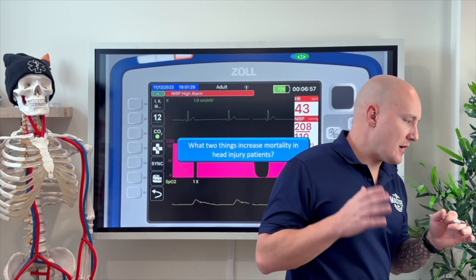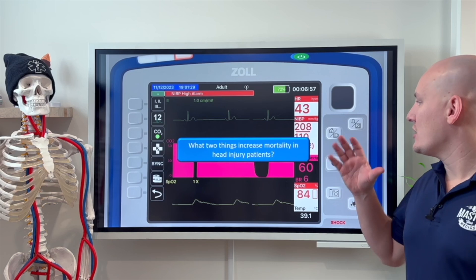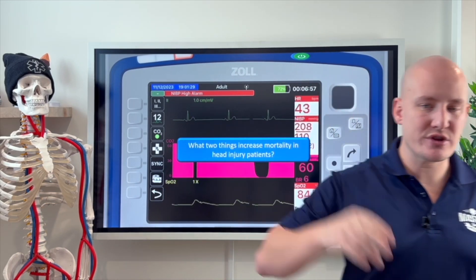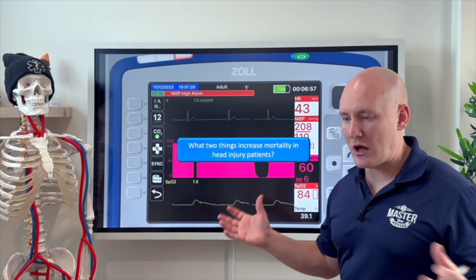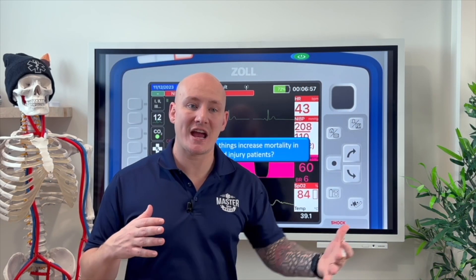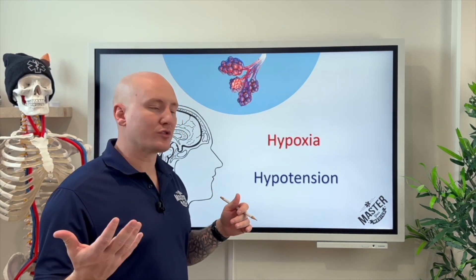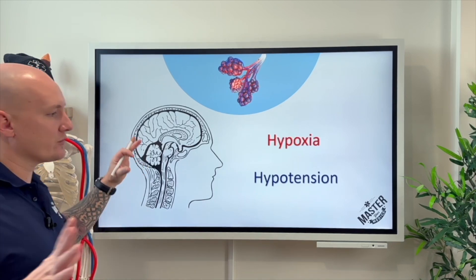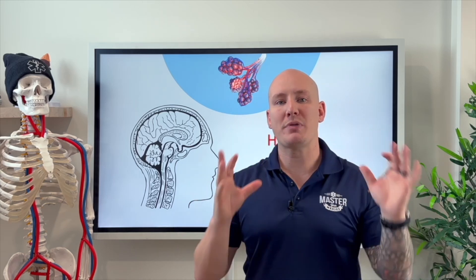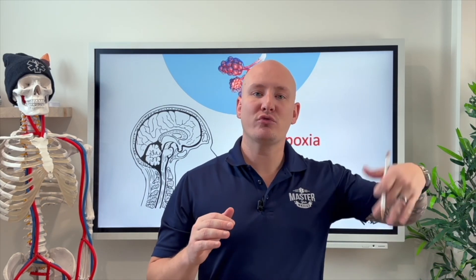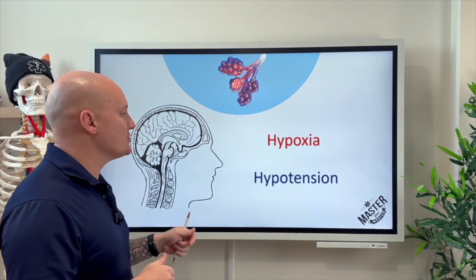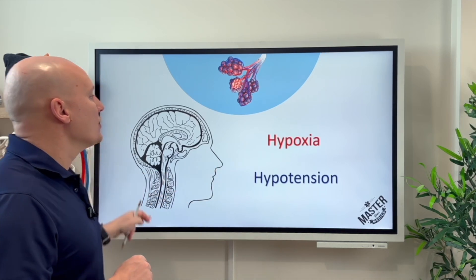Given all these concerning factors, my question is: what are the two things that cause an increase in mortality in head injury patients? The answer is hypoxia and hypotension. When your monitor is going off with a bunch of issues, you need to focus on those two things, because they are what will most negatively impact this patient. Those are the priorities we need to address.